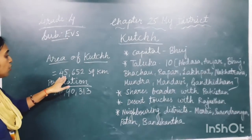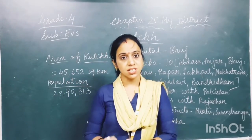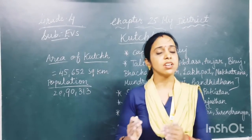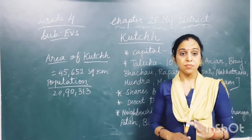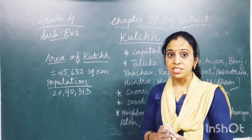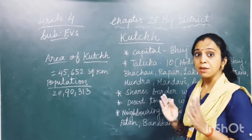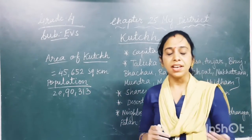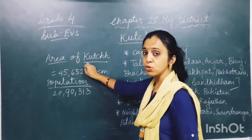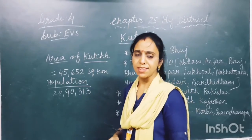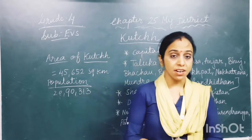The area of Kutch is 45,652 square kilometers, and according to its area, it is the largest district of Gujarat. If anyone asks which is the largest district of Gujarat, we can say Kutch. Its population is 20 lakh 90,330. There are also mountains in Kutch like Lilio, Bhujiyo, Dhinodal, and Kalo.